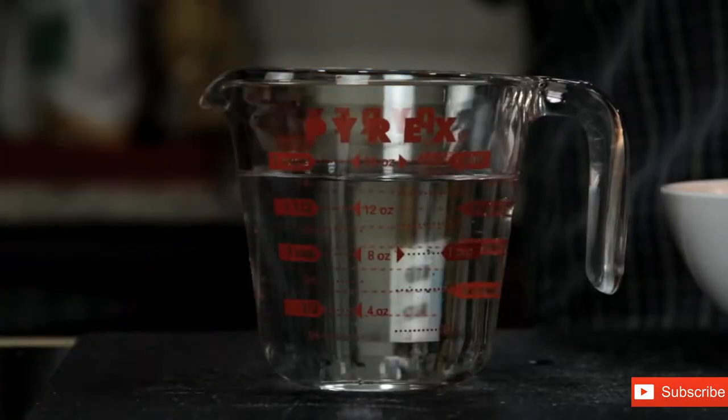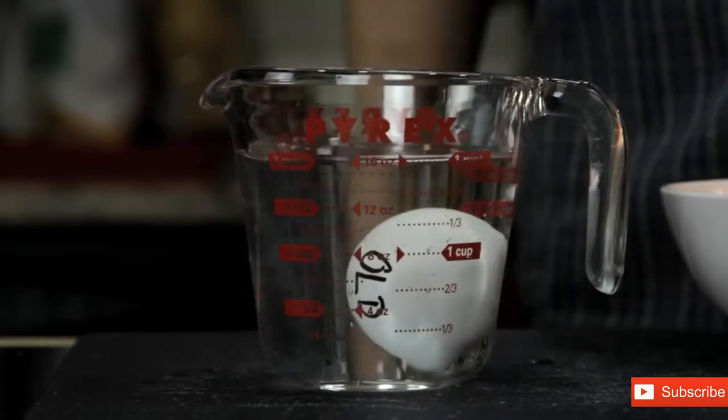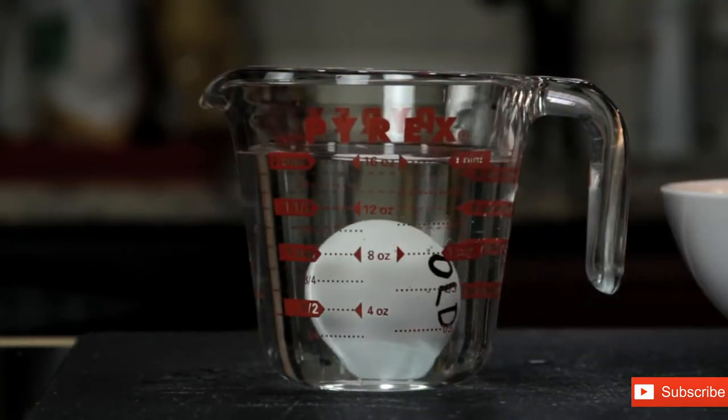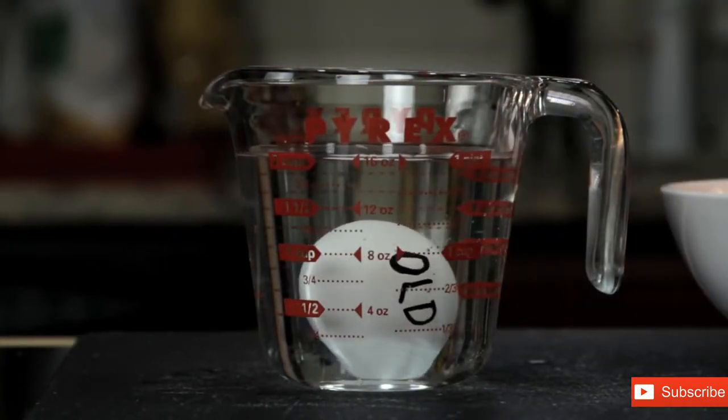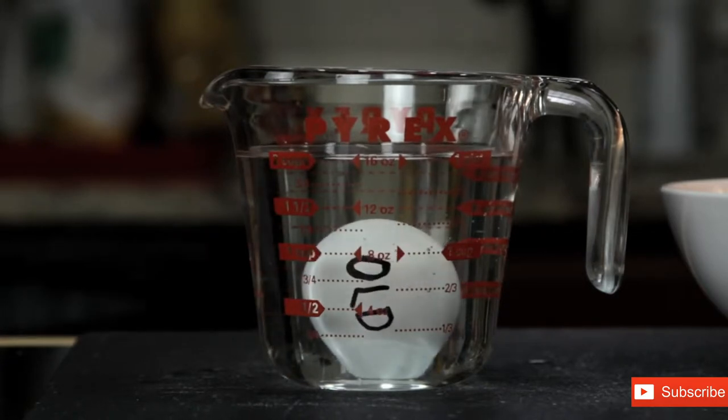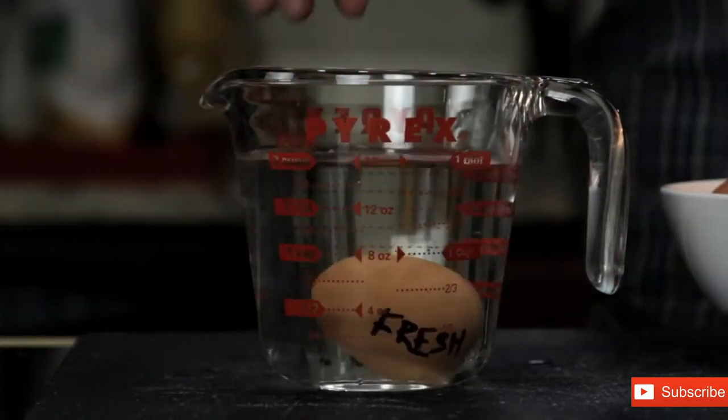You can also tell how fresh an egg is by carefully putting it into a cup of water. As an egg ages, the air pocket in the fat end is going to get bigger and bigger, which will make the egg stand upright or sometimes even float. A really fresh egg will sink and lie flat on its back like this.